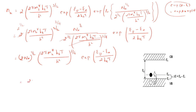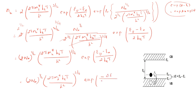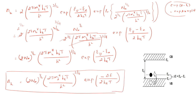So NH equals 2 NA power 1/2 into (2π mH* KBT divided by H²) whole power 3/4, exponential of minus delta E divided by 2KBT. We know EA minus EV is delta E, so I write minus delta E. You can refer to the picture shown. So this is the expression for carrier concentration in P-type semiconductor. Delta E represents the energy required for an electron to move from the valence band to the acceptor energy level.